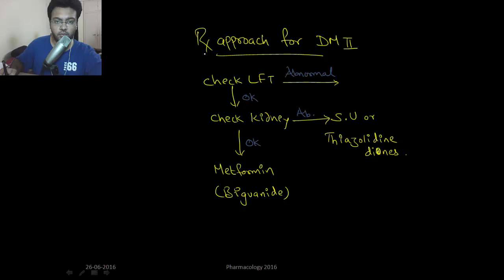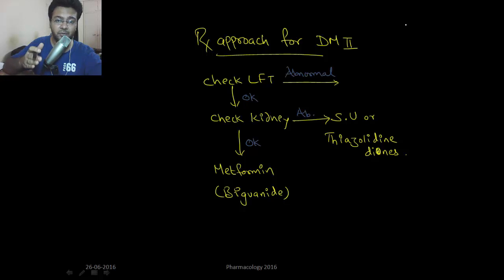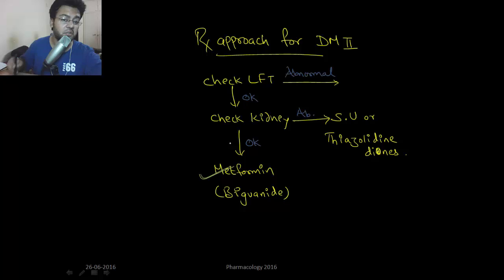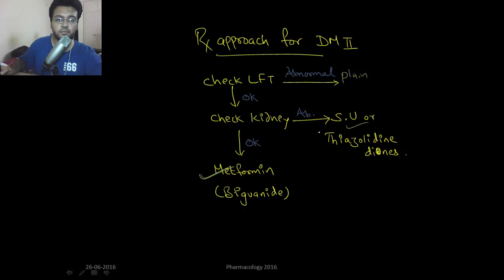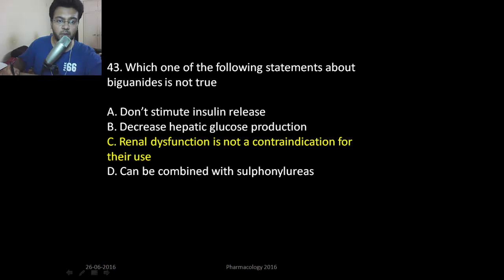So metformin decreases peripheral resistance while sulfonylureas act on the beta cells. When treating a type 2 diabetes mellitus patient, first check liver function and renal function tests. If both are normal, start with metformin — it is the drug of choice for type 2 diabetes. If liver function is abnormal, give plain insulin. If kidney function is abnormal, give sulfonylureas or thiazolidinediones. For biguanides, it is essential to check renal function.